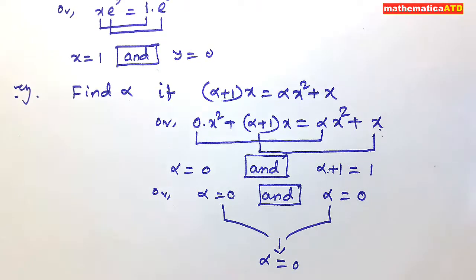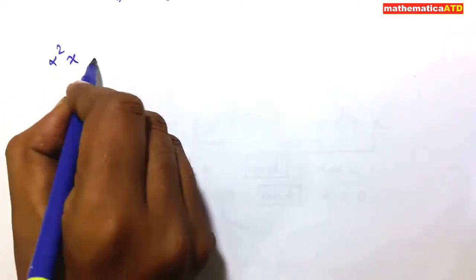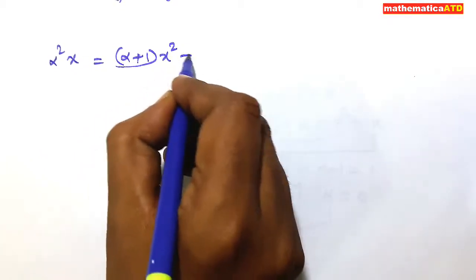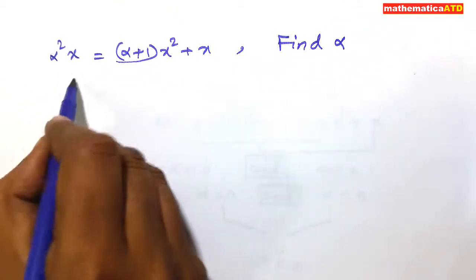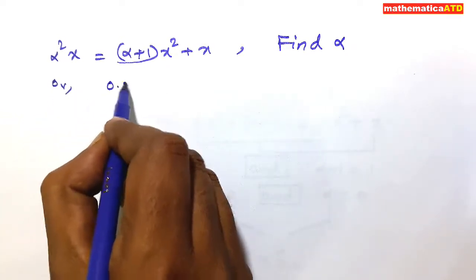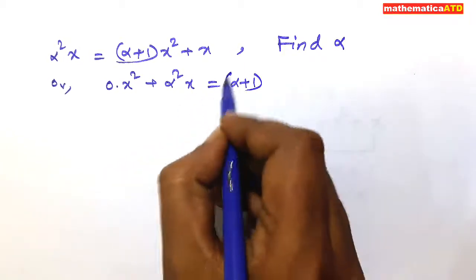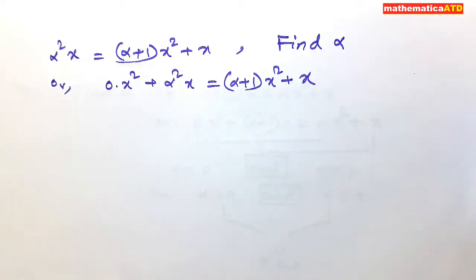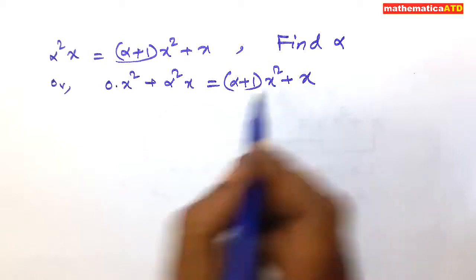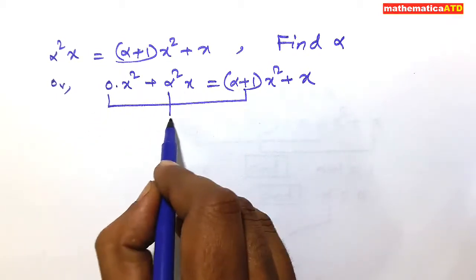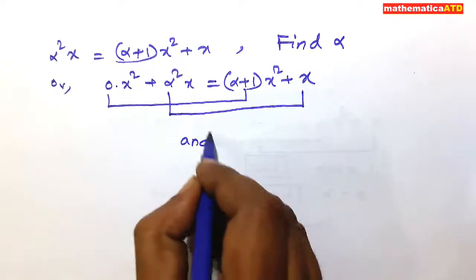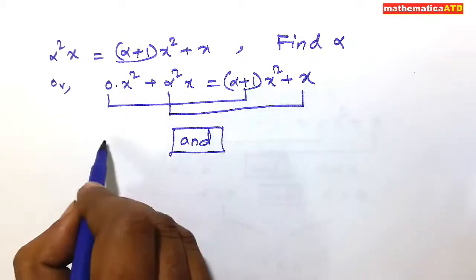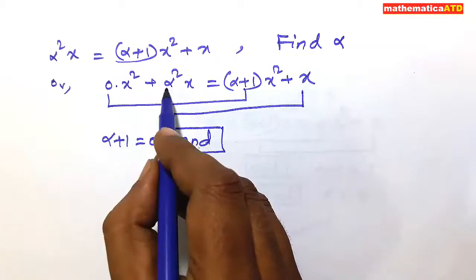Next, another example: alpha squared times x is equal to (alpha plus 1) times x squared plus x. Find alpha. Arrange the left side as 0·x squared plus alpha squared·x equals (alpha plus 1)·x squared plus x. Compare both sides — the coefficient of x squared on the left to the right, and the coefficient of x on the left to the right. The conjunction used in comparison is 'and'. So 0 is equal to alpha plus 1, meaning alpha plus 1 equals 0.